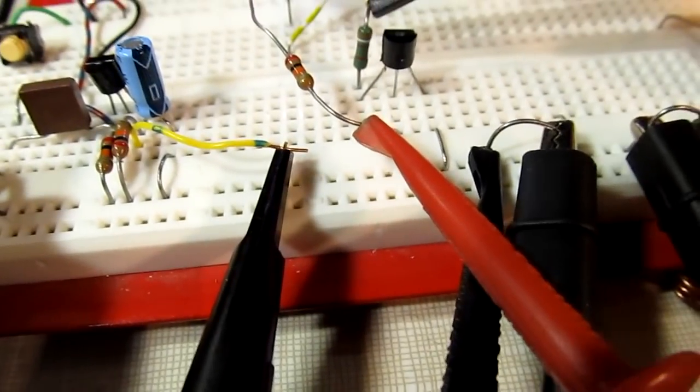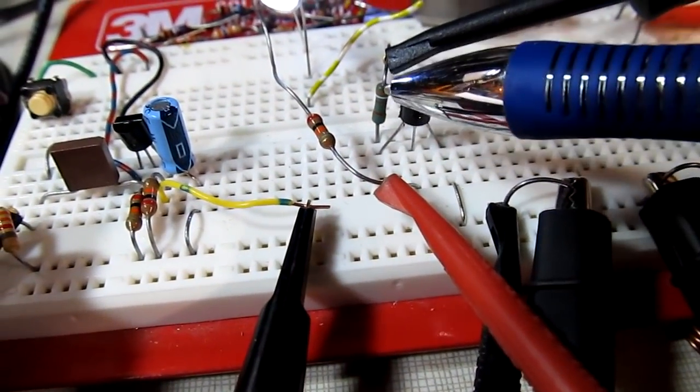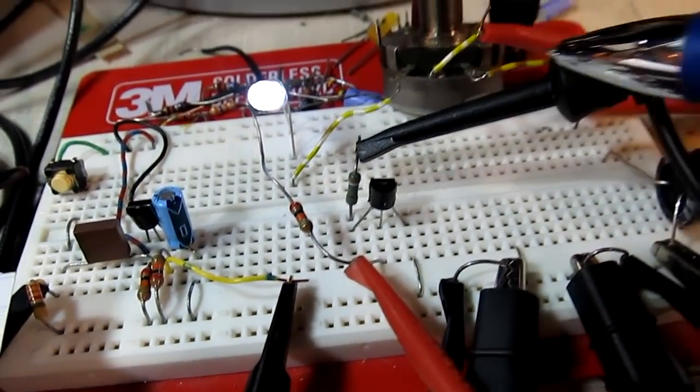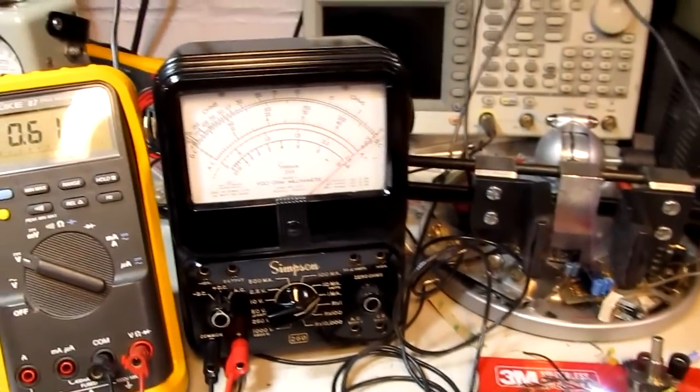So this is it over on the breadboard here. Let's see if I can get this thing here to focus. So there's the SCR, my 3.9K resistor, the 20K that's sitting on the gate, and there's that bright LED and the pot back here, and then the ammeter.